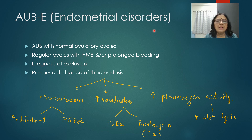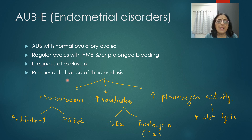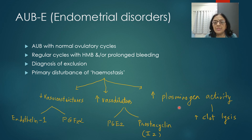AUB-E refers to endometrial disorders — a diagnosis of exclusion when regular ovulatory cycles are present with heavy or prolonged menstrual bleeding and no other cause is found. There are no specific tests for these primary endometrial disturbances. Pathophysiology involves decreased vasoconstrictors (endothelin-1 and prostaglandin F2-alpha), increased vasodilators (prostaglandin E2 and prostacyclin I2), or increased plasminogen activity leading to increased clot lysis and heavy menstrual bleeding.